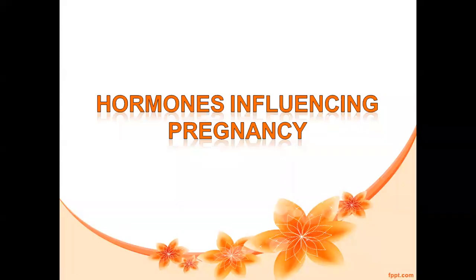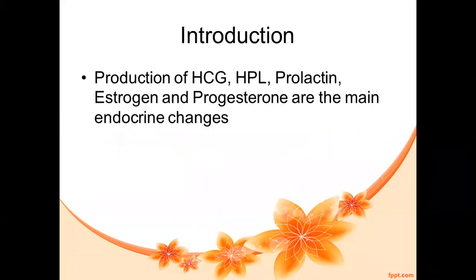Hello students, today's class covers hormones influencing pregnancy and immunization during pregnancy. During pregnancy, HCG (human chorionic gonadotropin), HPL (human placental lactogen), prolactin, estrogen, and progesterone are the main hormones — the physiological changes happening in the endocrine system of women during pregnancy.